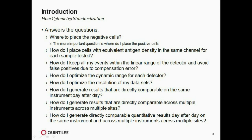Now that we know we want the positive in the same place every day, we have to ask: how do we go about doing this? If I'm setting up the instrument every day, how do I make sure events aren't running off scale — where compensation error will cause false positives? How do I optimize the dynamic range for each detector? How do I know I'm getting the best performance? How do I optimize the resolution of my data, and generate results that are directly comparable on the same instrument day after day, or across multiple instruments?